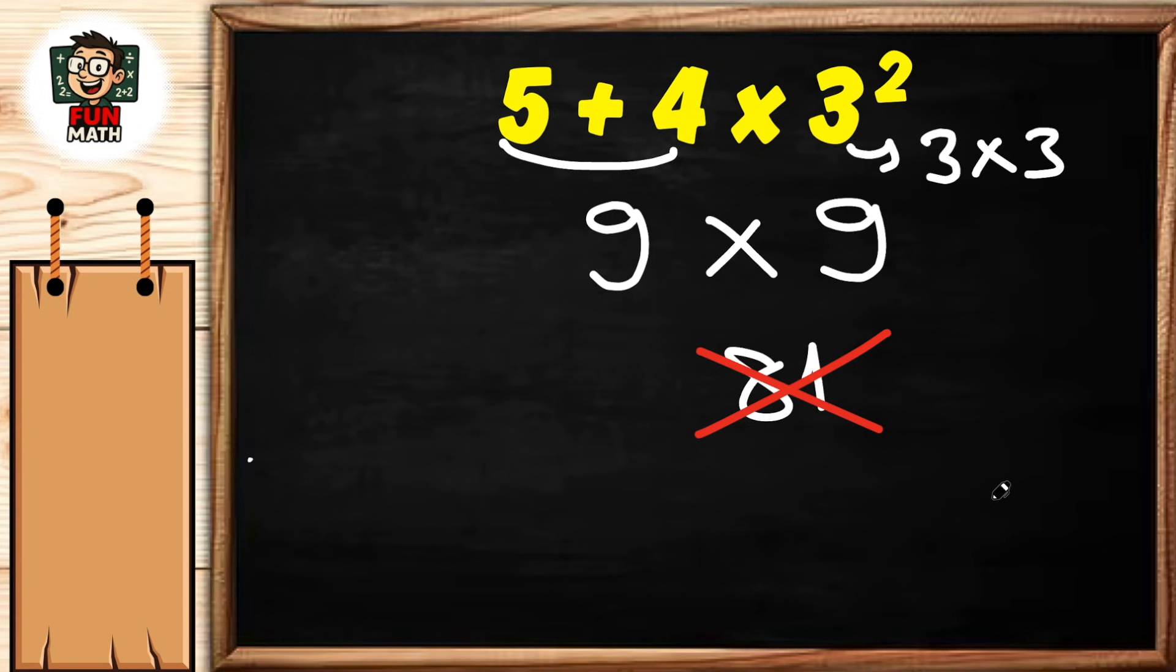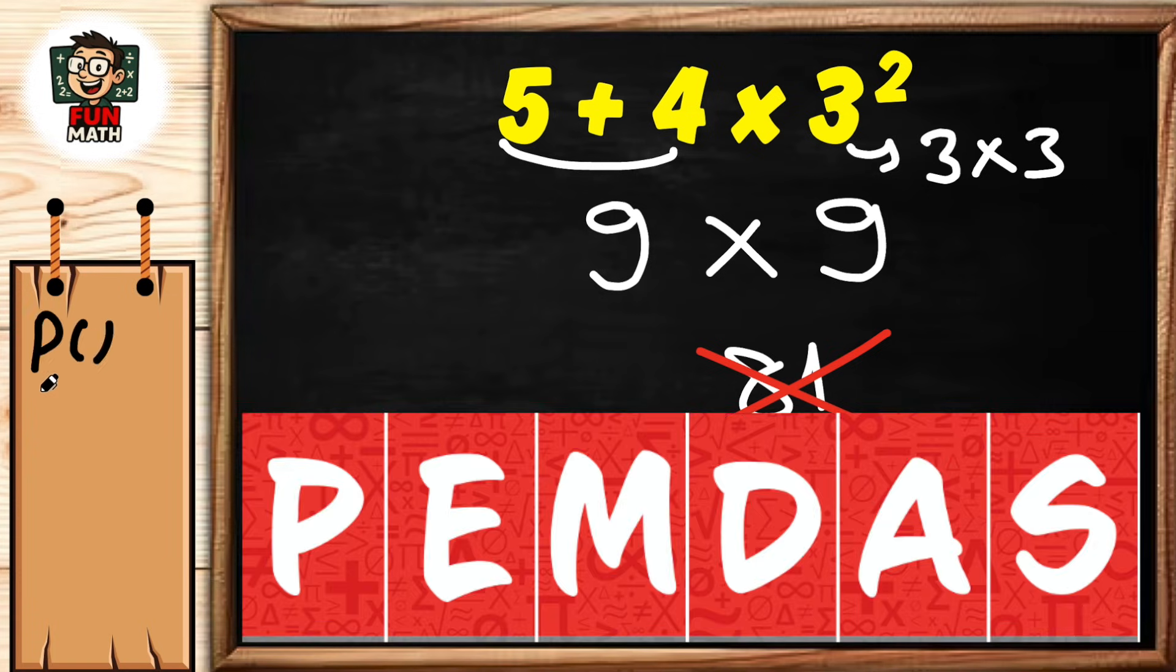We use the order of operations, which we call PEMDAS. P stands for parentheses, E stands for exponent, M stands for multiplication, D stands for division, A stands for addition, and S stands for subtraction.